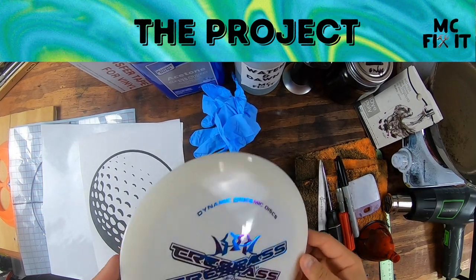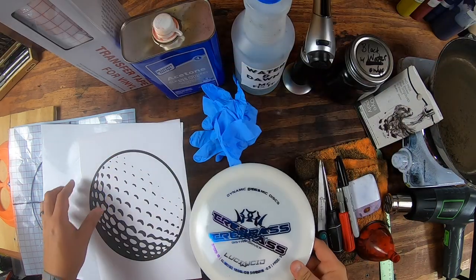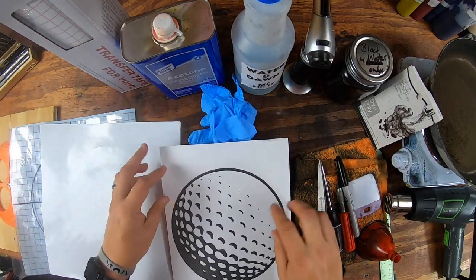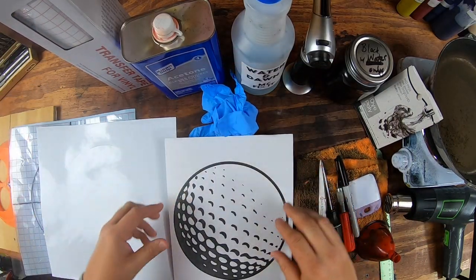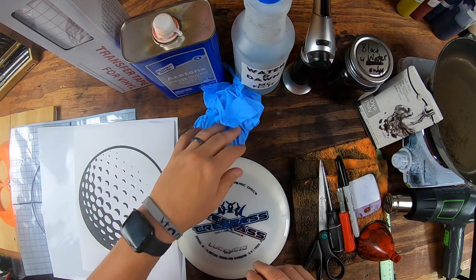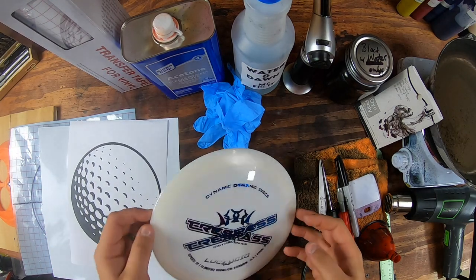Hey guys, it's MC Fix It here. We're back with another disc dye. We have this Trespass and we're gonna make a ball golf stencil dye on it with some black dye, and it should turn out really sweet.